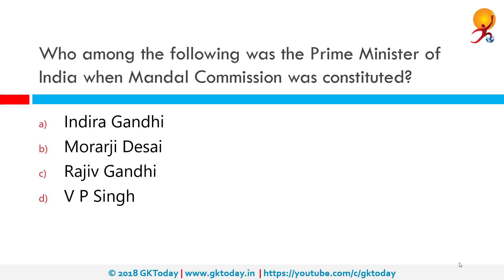Who among the following was the Prime Minister of India when the Mandal Commission was constituted? The Mandal Commission, or the Socially and Educationally Backward Classes Commission, was established on 1st January 1979 to identify the socially or educationally backward classes of India. It was headed by the late B.P. Mandal, an Indian parliamentarian, and used 11 social, economic, and educational indicators to determine backwardness. At that time, the Janata Party government led by Morarji Desai was in office. So the correct answer is B: Morarji Desai.